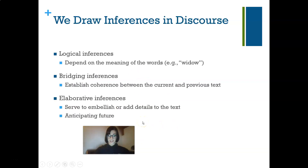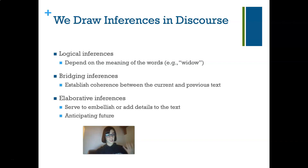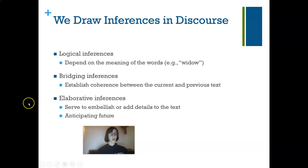Every time we deal with discourse, we are drawing inferences. We have several types. A logical inference depends on the meaning of a word — for example, a widow is female and has lost a spouse to death. We also have bridging inferences, which are designed to establish coherence between previous text and current text.